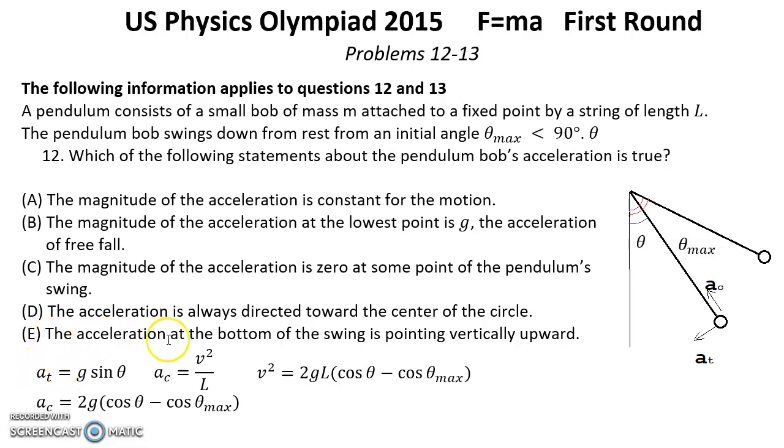E: The acceleration at the bottom of the swing is pointing vertically upward. That's true. Tangential equals 0 and the centripetal is going vertically. So that's correct answer.